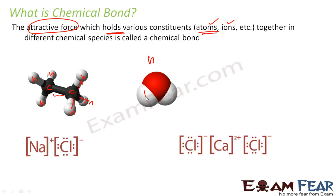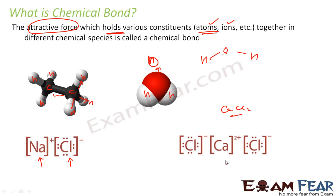Also, in the case of ions — this is a sodium ion, this is a chlorine ion — there is some force which is holding these two ions, and that force is called the chemical bond. In the case of CaCl2, I have a calcium ion with a plus-two charge and two chlorine ions with minus-one charge each. The force holding these ions together is called a chemical bond.